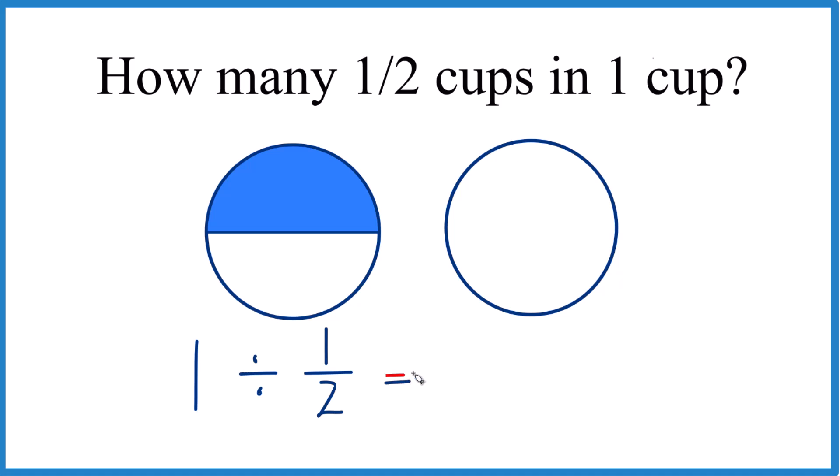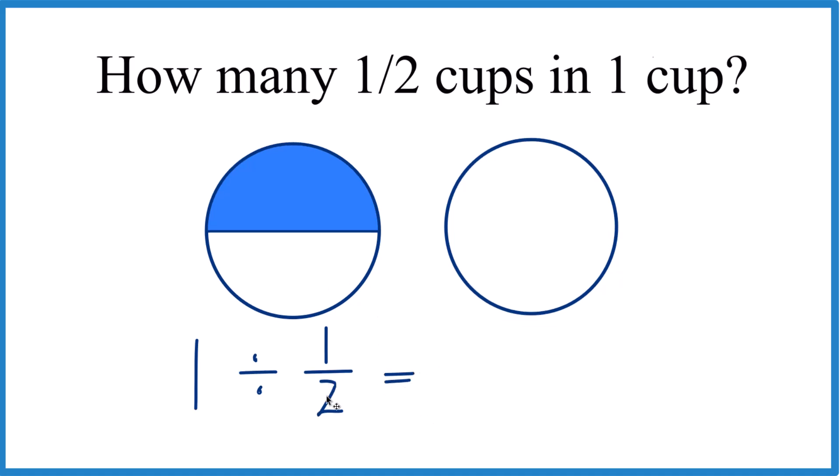But when we divide by a fraction, it's a lot easier if we can take the two here, move it to the top and the one to the bottom. That's called the reciprocal. So the reciprocal of 1/2 is 2 over 1.